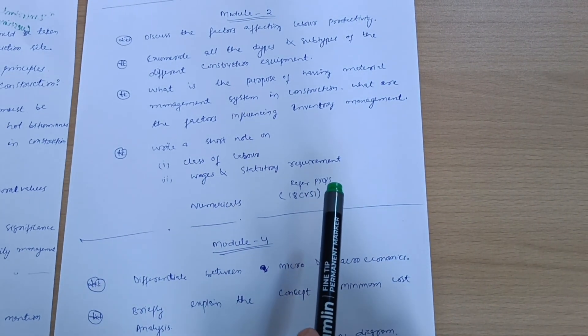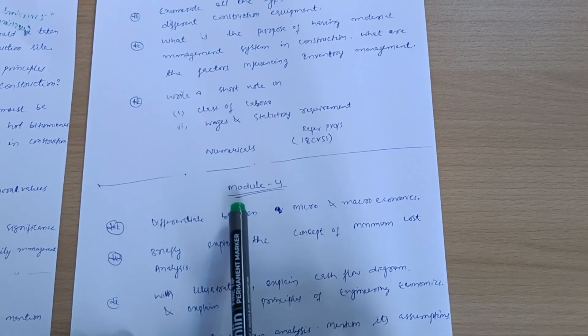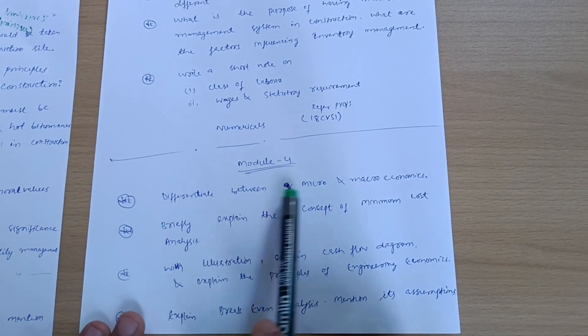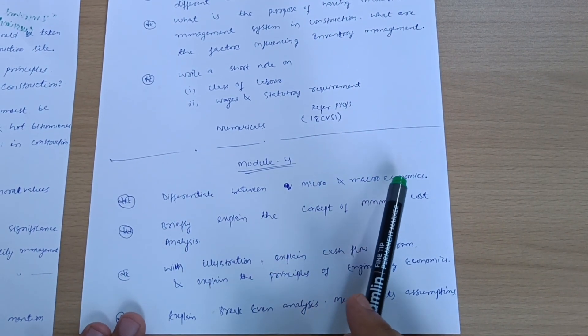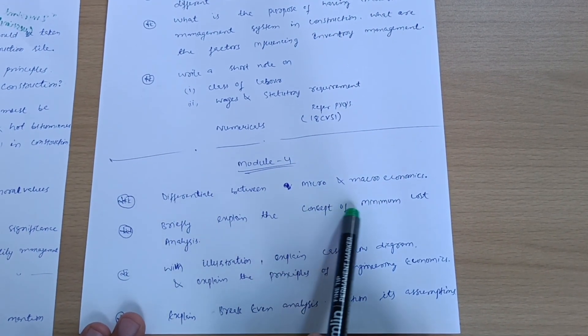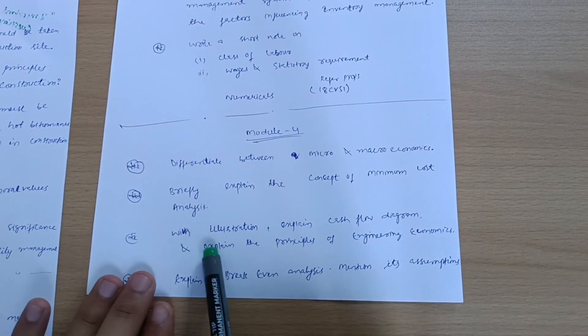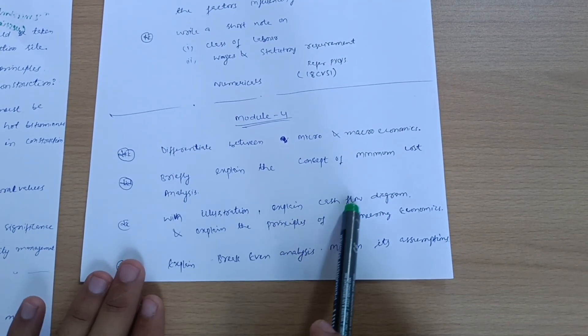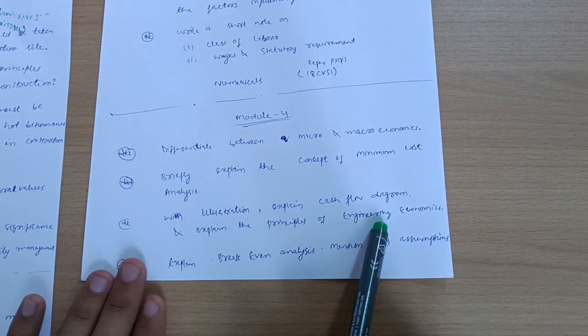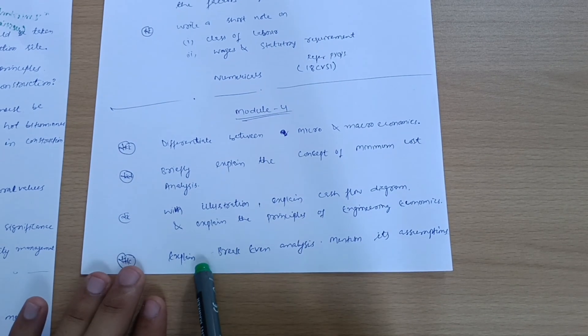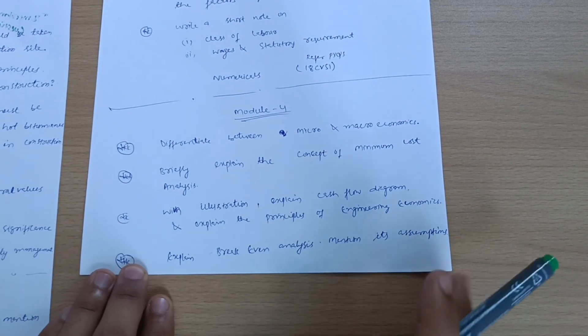Next is Module 4. Differentiate between micro and macro economics and briefly explain the concept of minimum cost analysis with illustration. Expand cash flow diagram and explain the principles of engineering economics. Explain break-even analysis. Mention its assumptions.